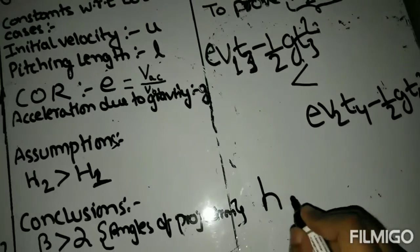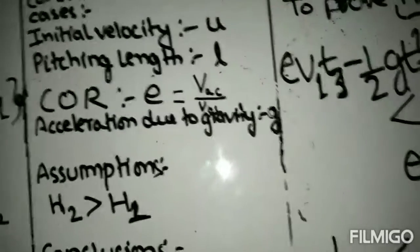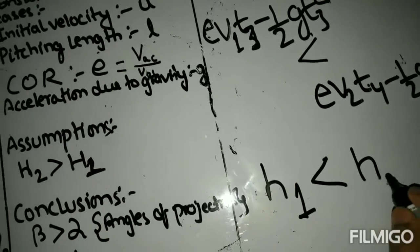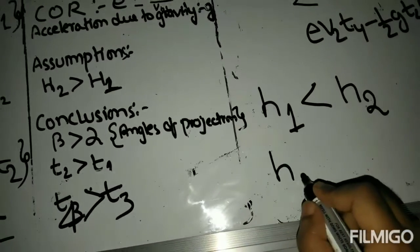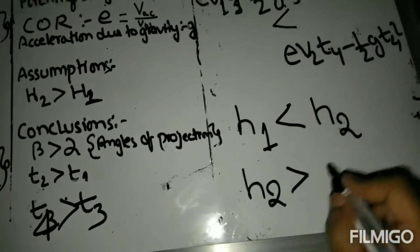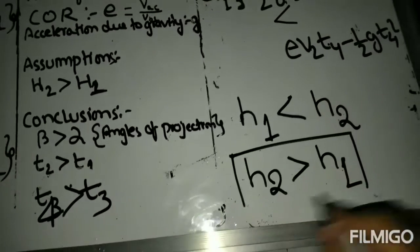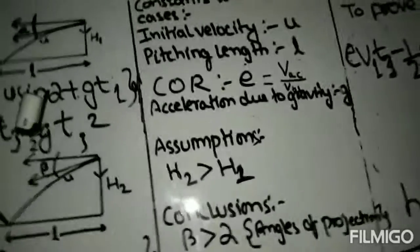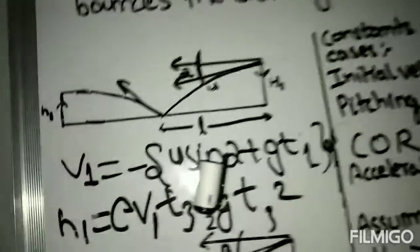Hence, we have reached our final conclusion or I can say the objective of this video, which is h1 is smaller than h2, or we can also say that h2 is greater than h1. So this is how we can show mathematically that a taller baller bounces the ball higher than a shorter baller.